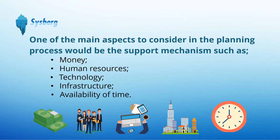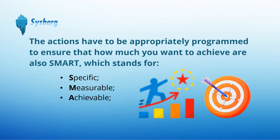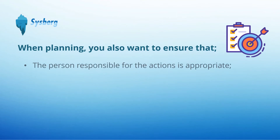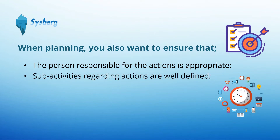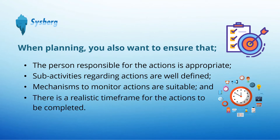It is not enough to come up with actions alone. The actions have to be appropriately programmed to ensure that how much you want to achieve your objectives is also SMART — which stands for specific, measurable, achievable, relevant, and time-bound. In other words, when planning, you also want to ensure that the person responsible for the actions is appropriate, sub-activities regarding actions are well-defined, mechanisms to monitor actions are suitable, and there is a realistic time frame for the actions to be completed. Your objectives can only become a reality if who, what, when, and how are also in harmony with the planned actions. Therefore, it is essential to properly review the planning process.